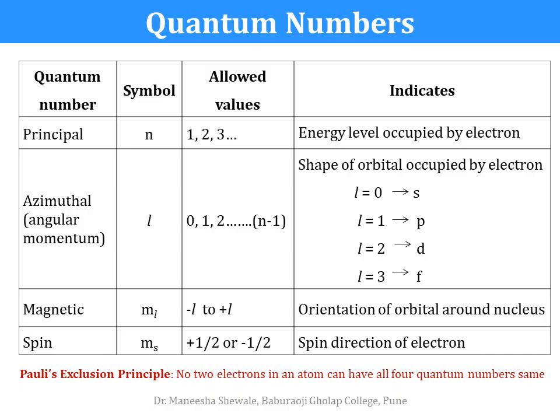First we will have a quick look at the 4 quantum numbers. The first is the principal quantum number having symbol N and has values 1, 2, 3 and so on. The second is the azimuthal or angular momentum quantum number L which can have values from 0, 1, 2 up to n-1. The third is the magnetic quantum number ML which can have values from minus L to plus L. The fourth is the spin quantum number MS which can be either plus half or minus half.